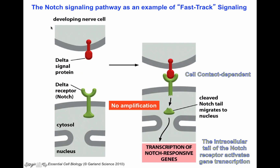The next fast-track signaling pathway is the Notch signaling pathway, which mediates cell-to-cell signaling. In this case, one cell has the Notch receptor and another cell has a Notch ligand — in this case, the Delta molecule. Once the cells interact in a cell-to-cell interaction, the intracellular domain of the Notch protein gets dissociated by a proteolytic cleavage and is able to become a transcription factor that travels to the nucleus, where it activates gene expression. Again, there is no amplification of signal, because the interaction of the ligand with the receptor directly mediates the cleavage of a transcription factor that goes straight to the nucleus.